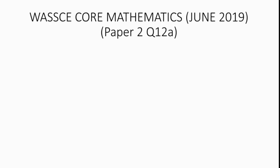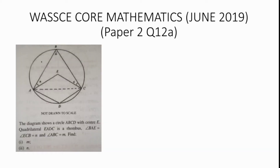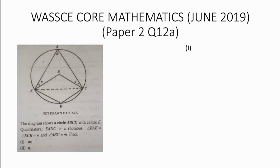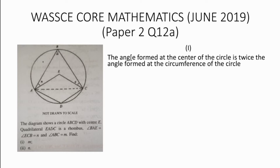June 2019 Equal Mathematics Paper 2, Question 12a. The diagram shows a circle ABCD with center E. Quadrilateral EABC is a rhombus. Angle BAE equals angle ECB equals n, and angle ABC equals m. We are asked to find the value of the angle marked m.